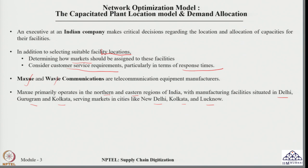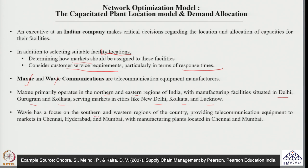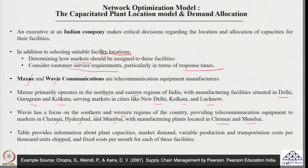In parallel, there is another company called Wavy, focusing on the southern and western regions of India. Wavy provides telecommunication equipment to markets in Chennai, Hyderabad, and Mumbai, with manufacturing plants primarily in Chennai and Mumbai. We are trying to find out how demand should be allocated for these two companies.